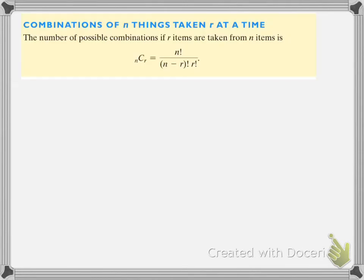Here's the formula for combinations, which is different than permutations. We use the notation nCr, where N is the total number and R is the number chosen — the number we're picking. And this involves factorials and so on.